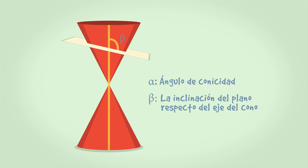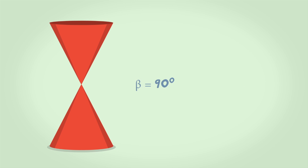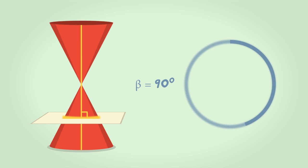Beta es la inclinación del plano respecto del cono. Si beta es igual a 90 grados, es decir, el plano es paralelo a la base del cono, entonces se obtiene una circunferencia.